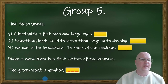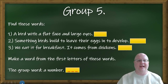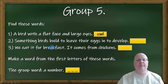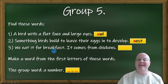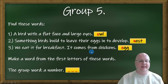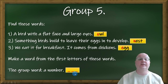Group number five: a bird with a flat face and large eyes is an owl. Something birds build to lay their eggs and raise their young is a nest. We eat it for breakfast and it comes from chickens — that's an egg. The group word here is a number.